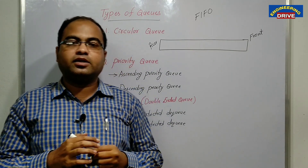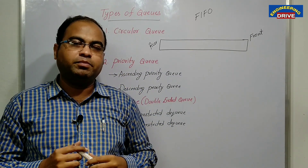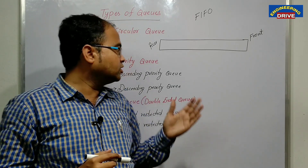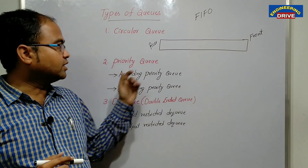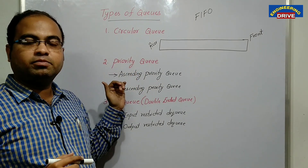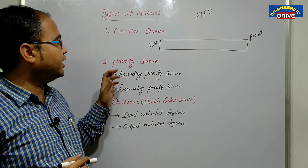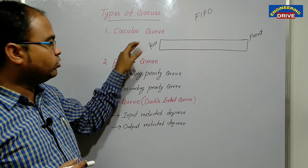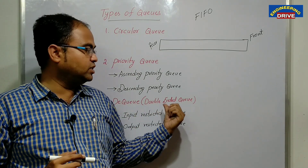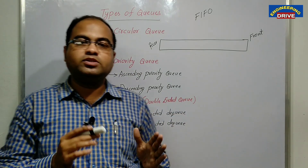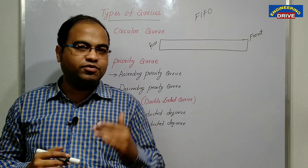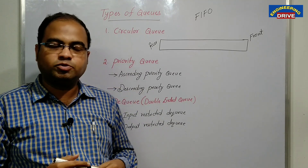Queues are divided into some major categories. There are three types of queues present in our linear data structures category: one is a circular queue, another one is a priority queue, and another one is a dequeue, which is also known as double ended queue. Every queue has its merits and demerits — let us see how they work and what the differences between them are.